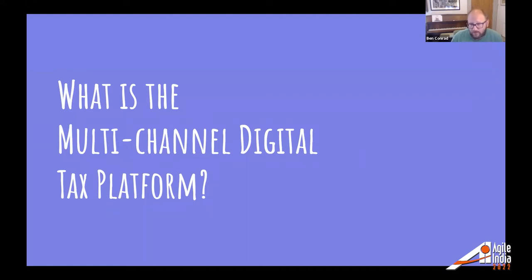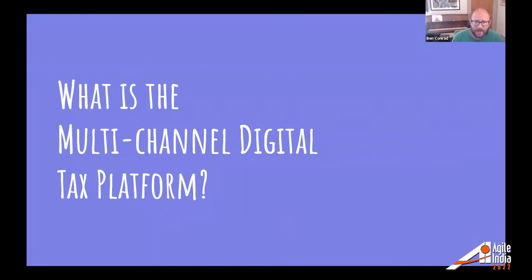In an effort to reduce postage costs, HMRC have been building digital services in line with the approach defined by the UK Government Digital Service — GDS — which is broadly digital by default. To make all of this easier, HMRC have a multi-channel digital tax platform, MDTP, or just the tax platform. MDTP is a platform as a service where the infrastructure, logging, metrics, alerting, CI/CD testing, prototyping, templates — everything you need to build and develop a digital service — is provided out of the box, and nearly all of it is self-service.